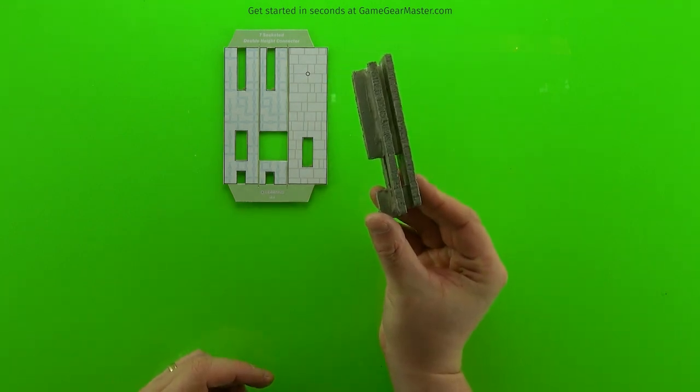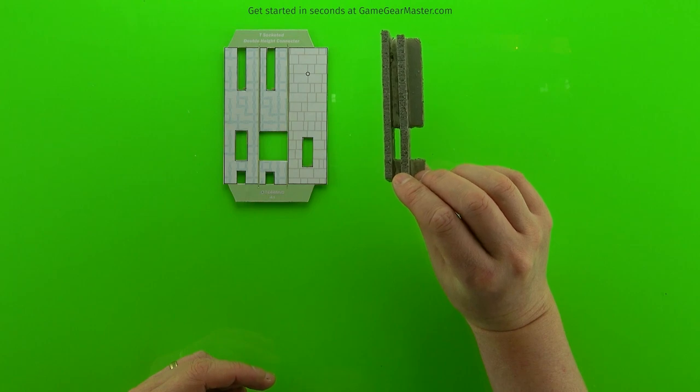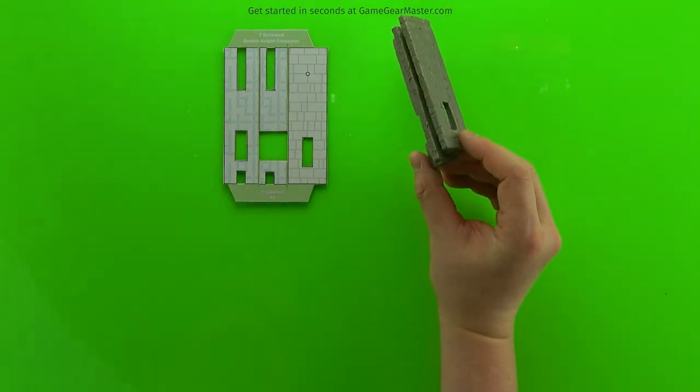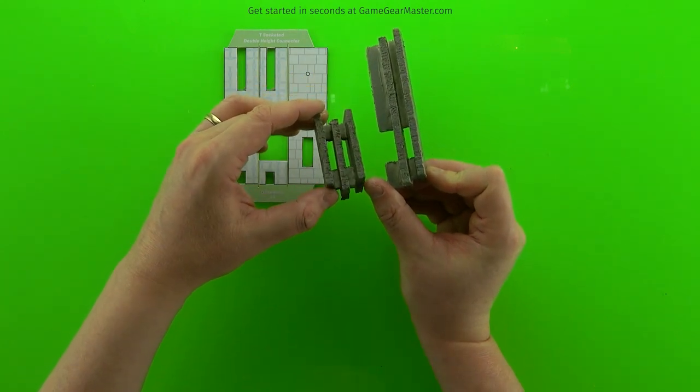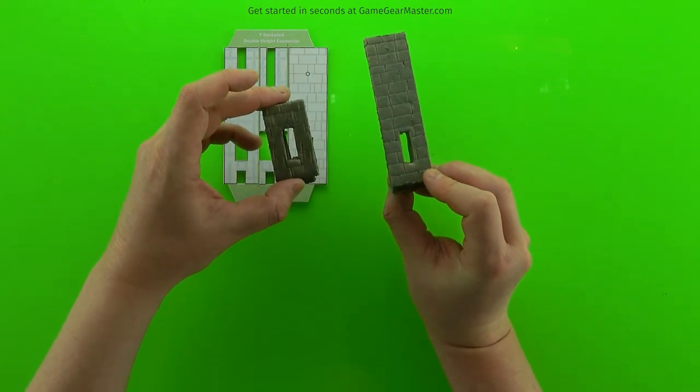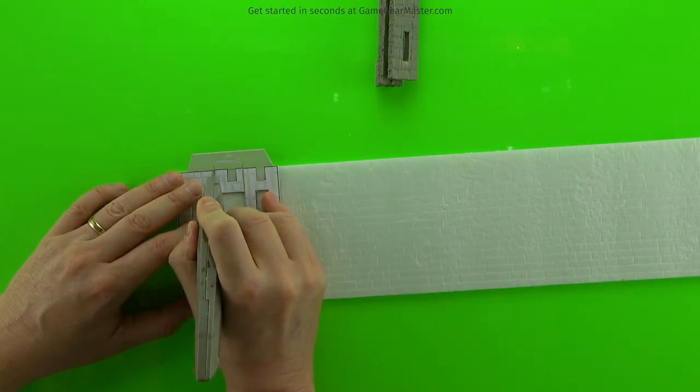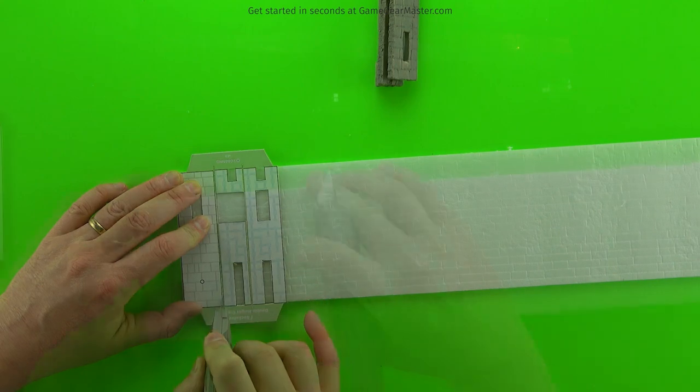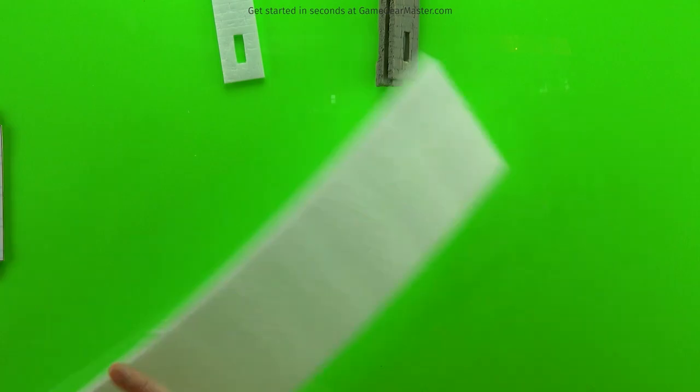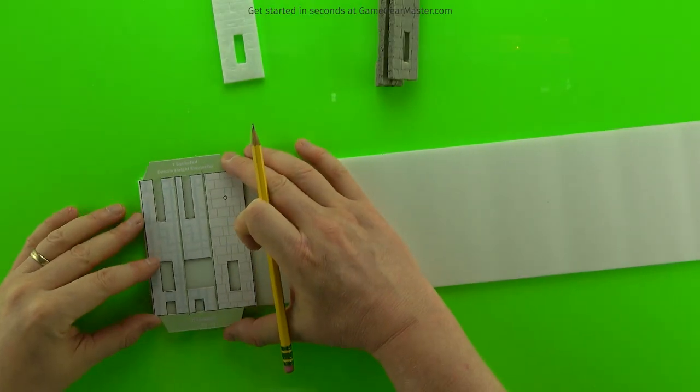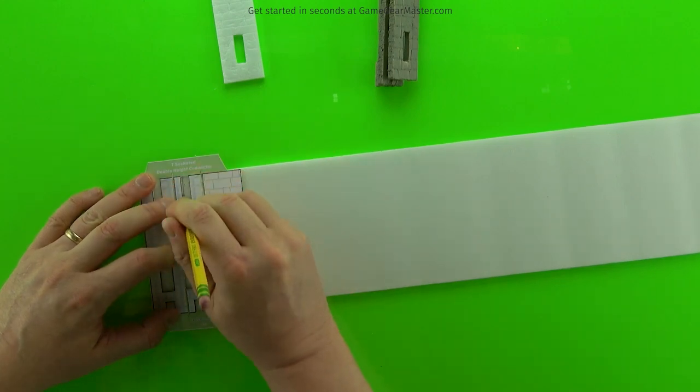Next, we're going to make a double height T connector. You'll notice that the socket on double height connectors is on the bottom half, but the idea is the same. You want to make sure that void in the middle lines up with the hole on the front. And this time we're going to use a 4-inch piece of textured foam, so we're going to cut out that exterior facade piece. Then we're going to do the same thing. We're going to take a 4-inch strip of untextured foam for the interior pieces. Now, I'm tracing this one out because I just want to show you can do it either way. It doesn't really matter.